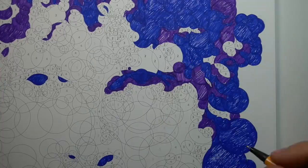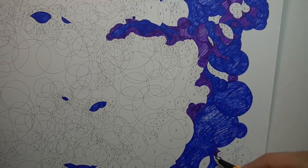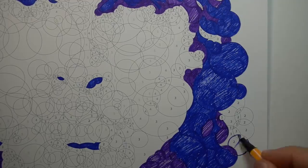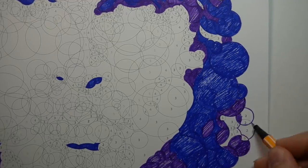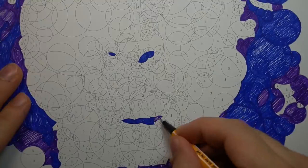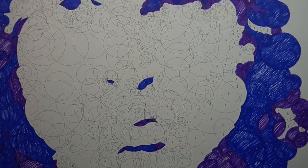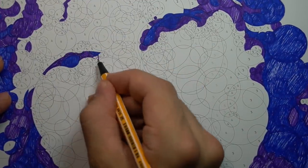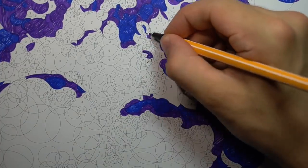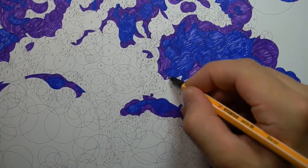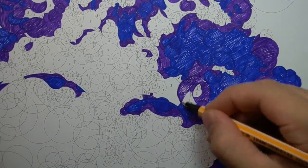If you guys want to see me color in some more pages from this book, let me know. Leave a comment. A thumbs up. All of that stuff really helps. Maybe I'll try out some different markers, try out some different color combinations, or do one with cross hatching. There's a bunch of different ways I can color in these pages. So if you want to see that stuff, let me know. And subscribe.